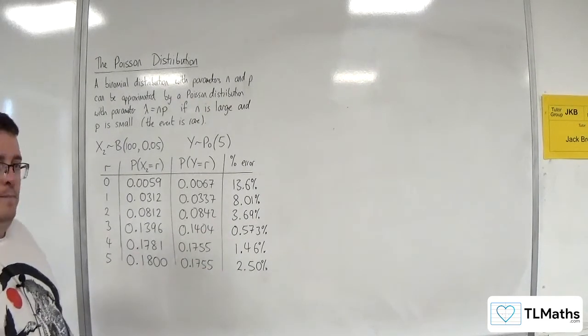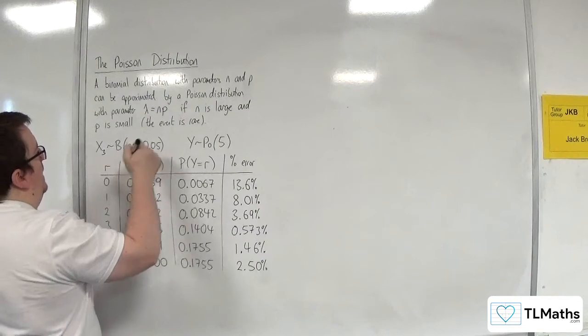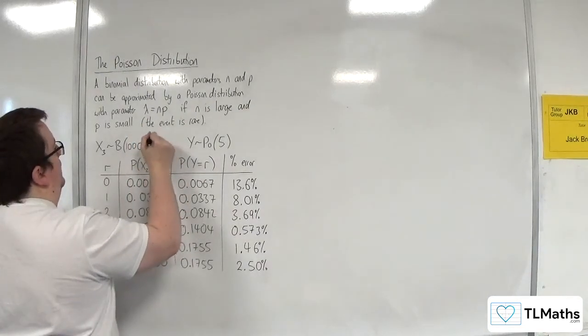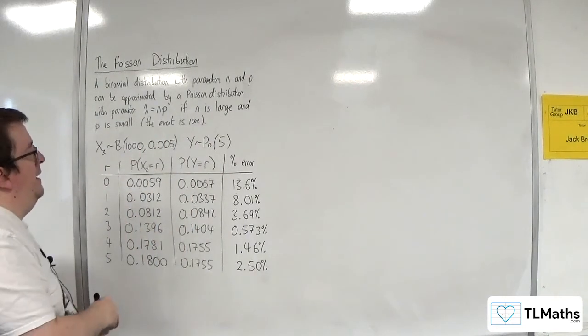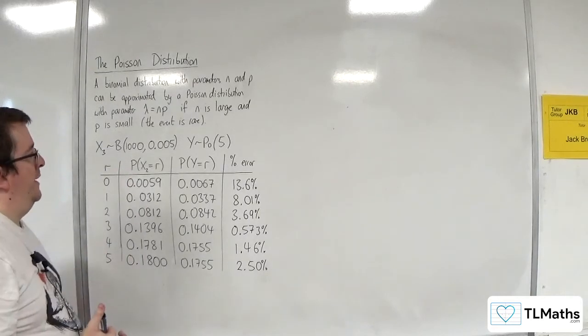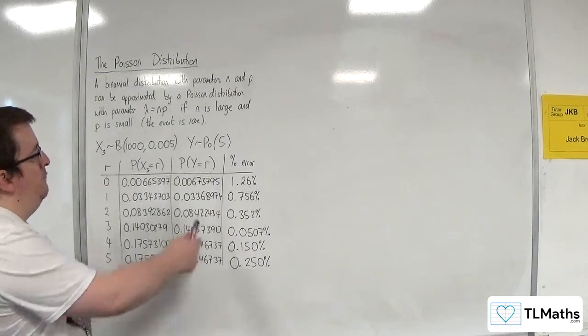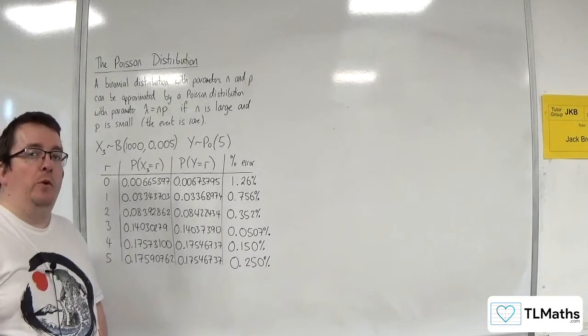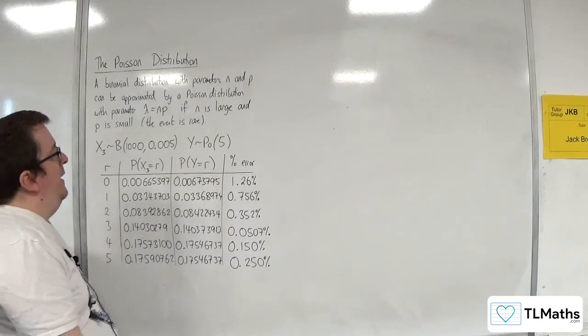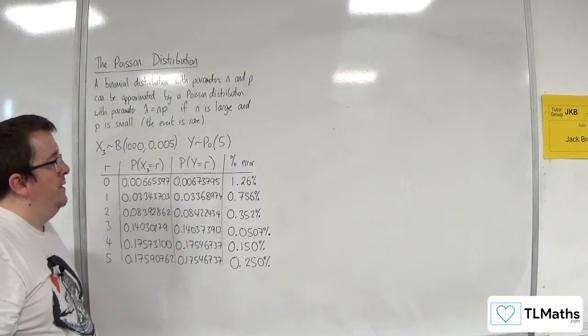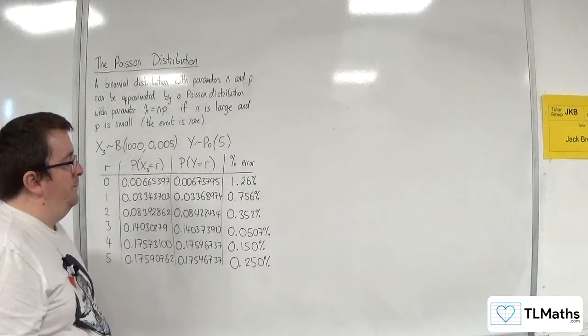But let's go one better, shall we? So let's change this. We've got x3. And we're now going to go to 1000 and 0.005 as the probability. Let's see what the percentage error looks like then. So in order to work out the percentage errors with these to be as accurate as possible, I've rewritten these probabilities out to 8 decimal places. So I've worked out those to 8 decimal places as well to work out the percentage errors. And you can see now that with n as 1000 and p is 0.005, these percentage errors are much lower than they were previously.